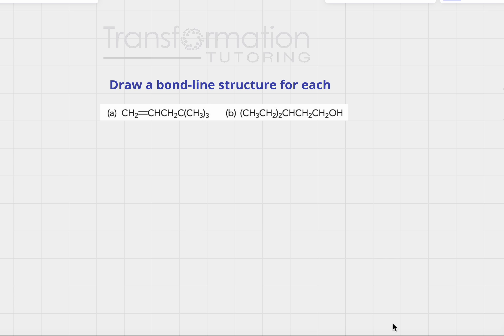We need to draw a bond line structure for each of two molecules, where we are shown carbons and hydrogens. The easiest way to start is to draw a structure where we show all the bonds, so we can see what is connected to what. Let's start with molecule A.